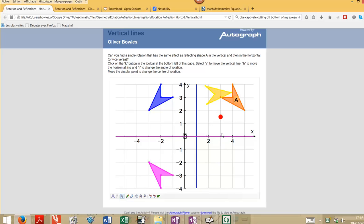And the question is, is there a single rotation that will take shape A directly onto that second image that has the same effect as those two reflections?